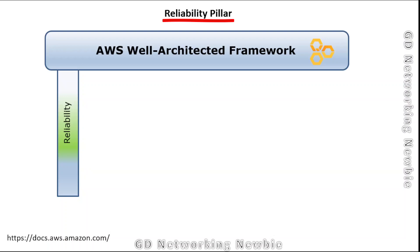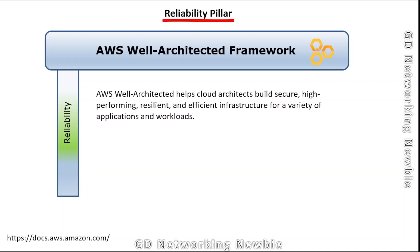Hi everyone. In this video we are going to discuss the reliability pillar of the AWS Well-Architected Framework. We have discussed the Well-Architected Framework in another video — it helps cloud architects build secure, high-performing, resilient, and efficient infrastructure for a variety of applications and workloads. The Well-Architected Framework provides a set of questions and design principles across six pillars, and we are going to discuss the reliability pillar in this video.